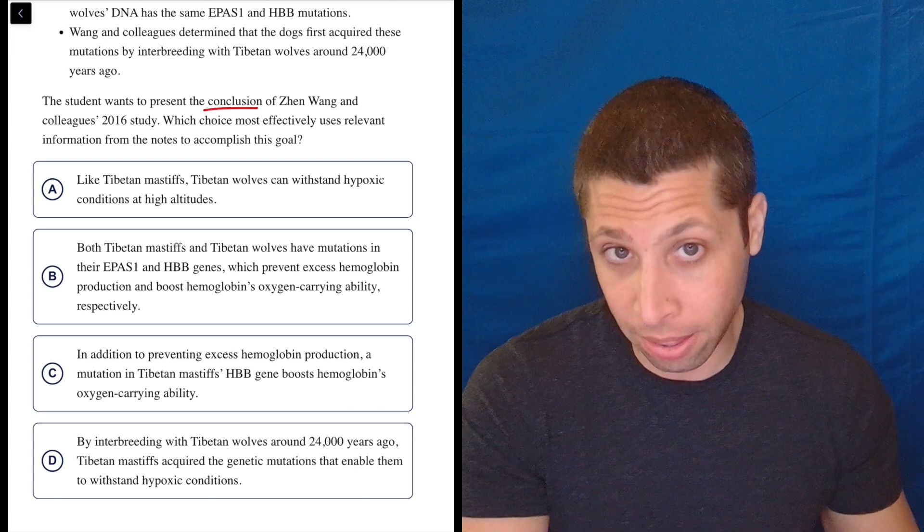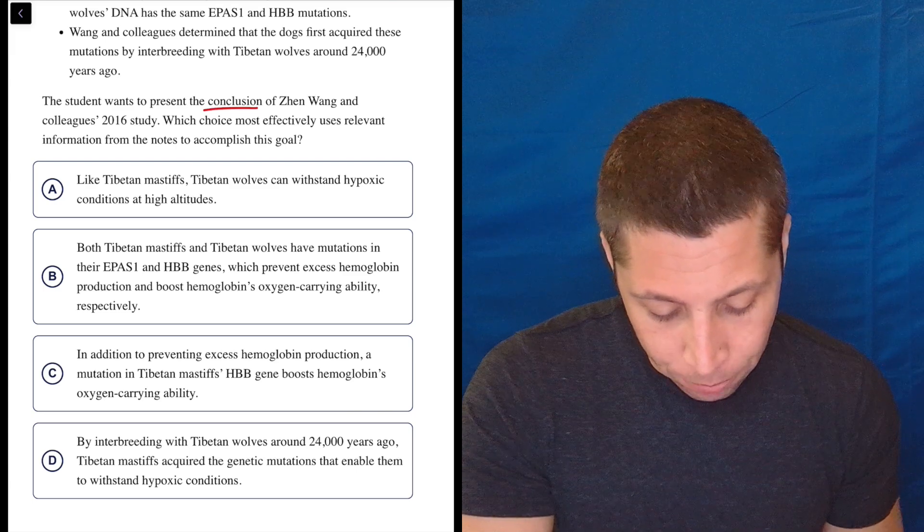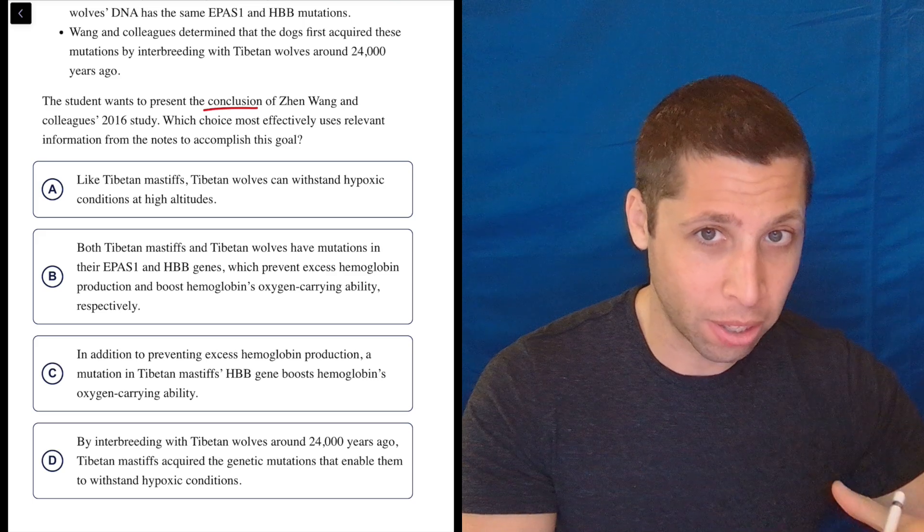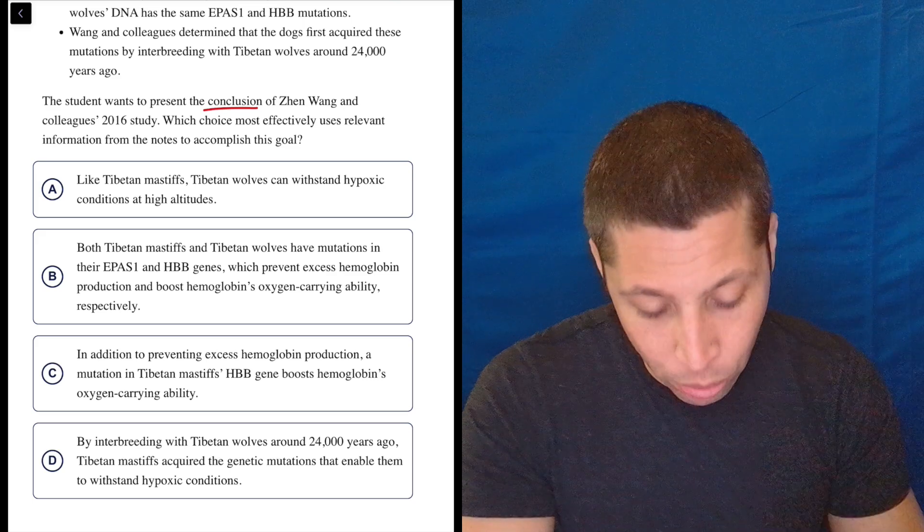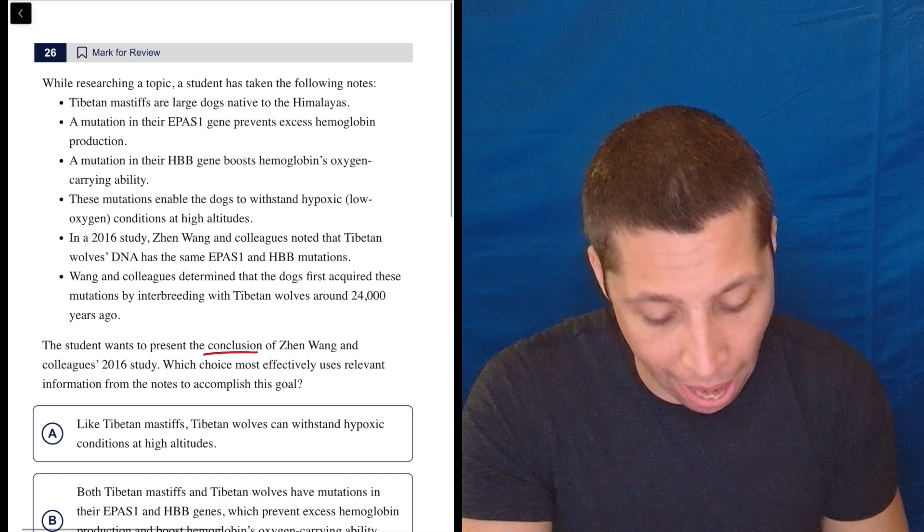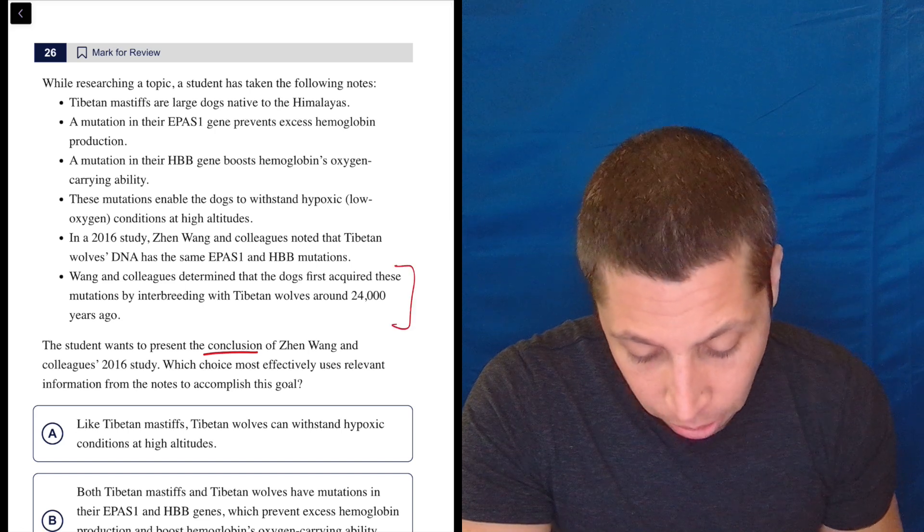This D feels like the conclusion to me because all the others sound like background information that now D is saying we learned how to compare these two things. But we just got to go to the bullet points. This is rare, but it happens. What do we say? Here we go.